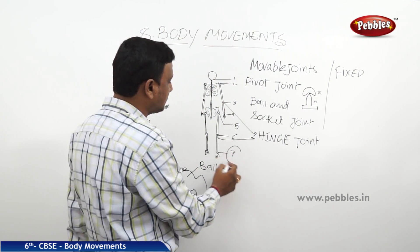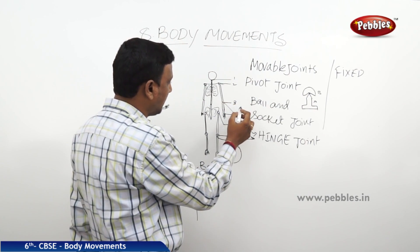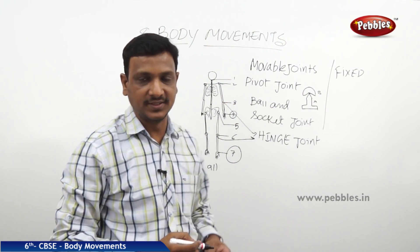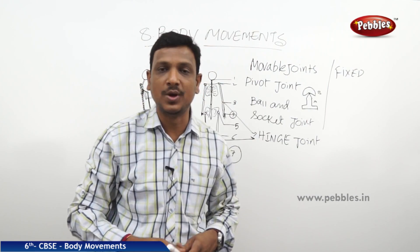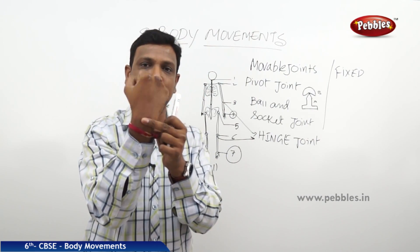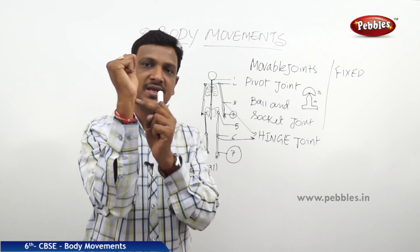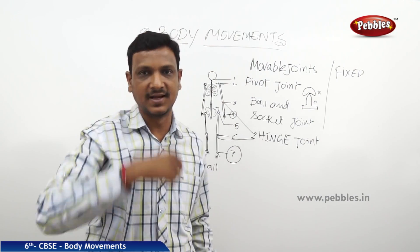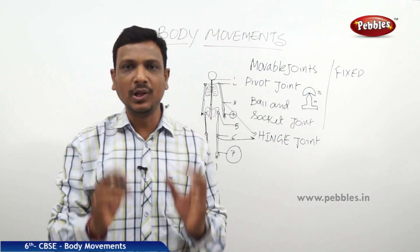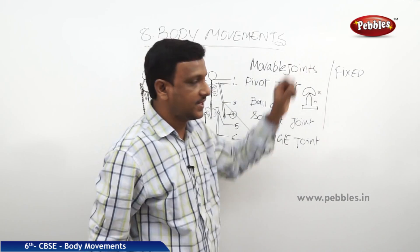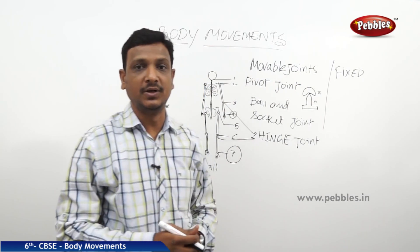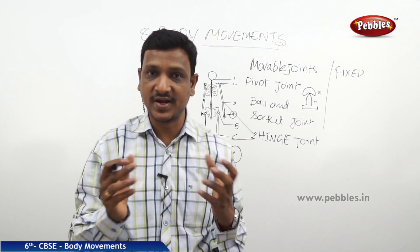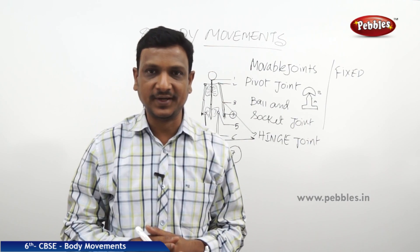Joints numbered four and seven are sliding joints. In your wrist and in your hand you have sliding joints — they just slide like that. These are also movable joints.